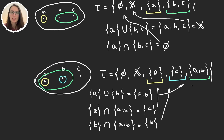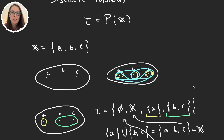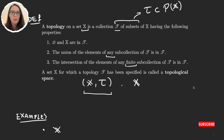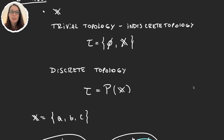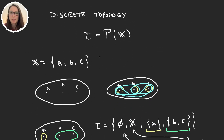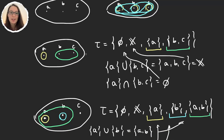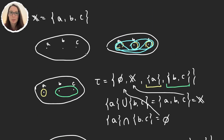So topologies can be very big or very simple — just the whole set and the empty set, or just a few sets where we totally ignore one of the elements. And the set can still be a topology. There are still many more topologies on this three-element set, so I recommend trying to find a few more examples on your own.